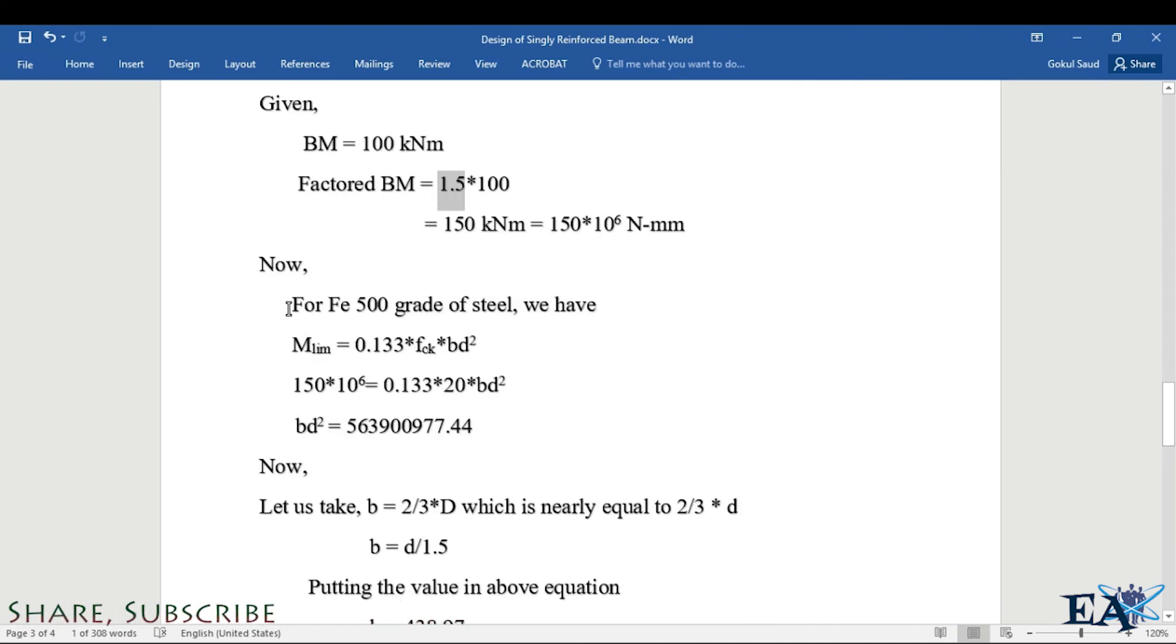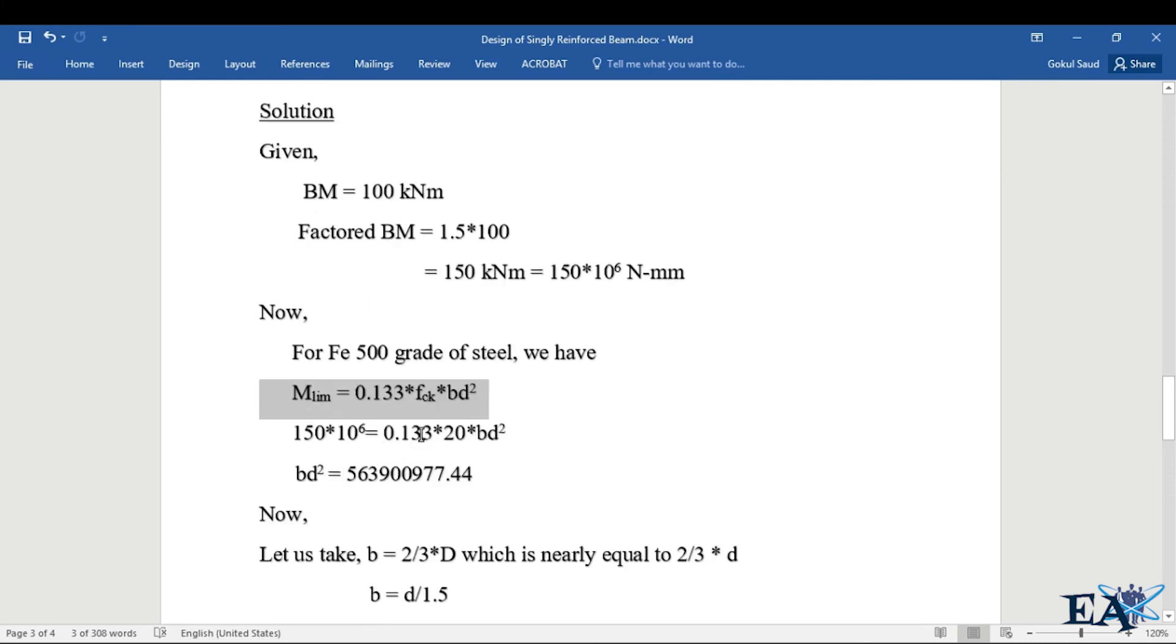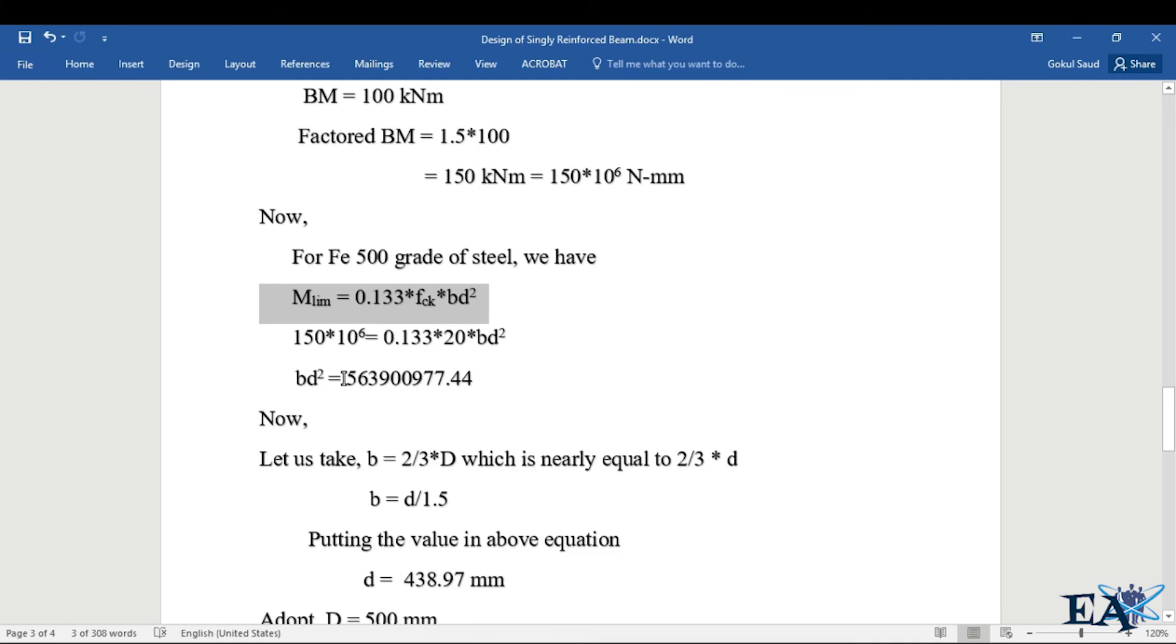Now we know that for Fe 500 grade of steel, we have limiting moment of resistance MLM = 0.133×fck×b×d². We have already seen this formula in the theoretical portion. So MLM here is 150×10⁶, equal to 0.133×fck×b×d². fck is 20, and b and d we don't know yet. So bd² we get this value.